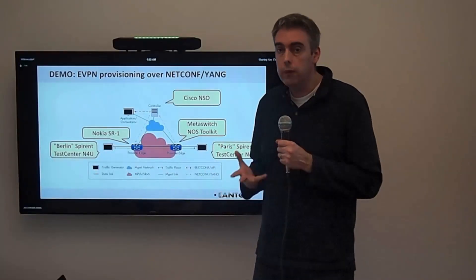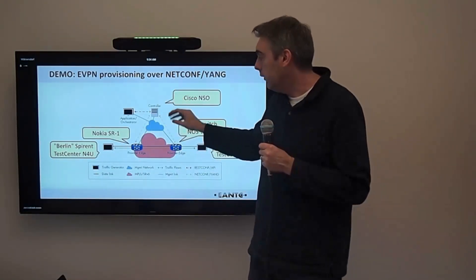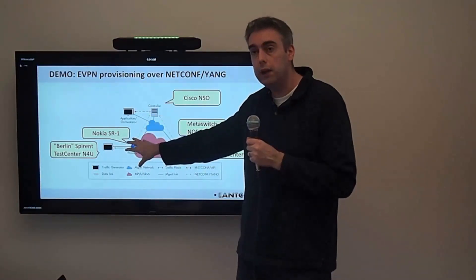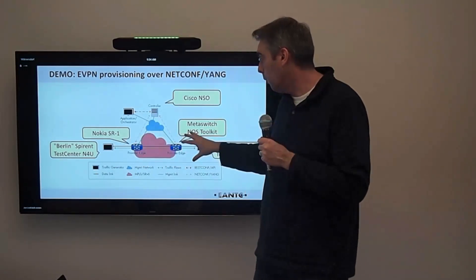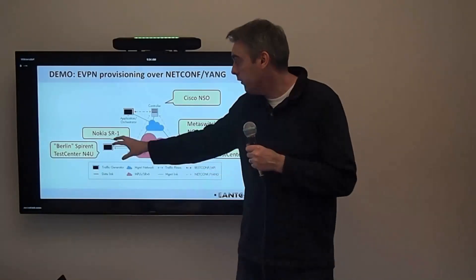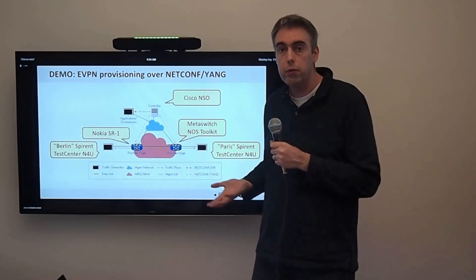Okay. So, now we're going to talk through the actual demonstration here. And to do this, we have the controller here. This is the Cisco NSO. And this is going to utilize the information it gathers from the provider edge routers. So, the one on the left here being the Nokia SR. And the one on the right here being the MetaSwitch NOS Toolkit. They are both exposing their Yang models up to the controller, which it's collected dynamically. And it's then going to take that intent information, convert that into an XML-based configuration, and send that directly down to each device using NetConf and Yang. And then, you'll see the traffic from the Spirant Test Center on the left communicate with the Spirant Test Center over on the right. So, let's talk you through doing that now.